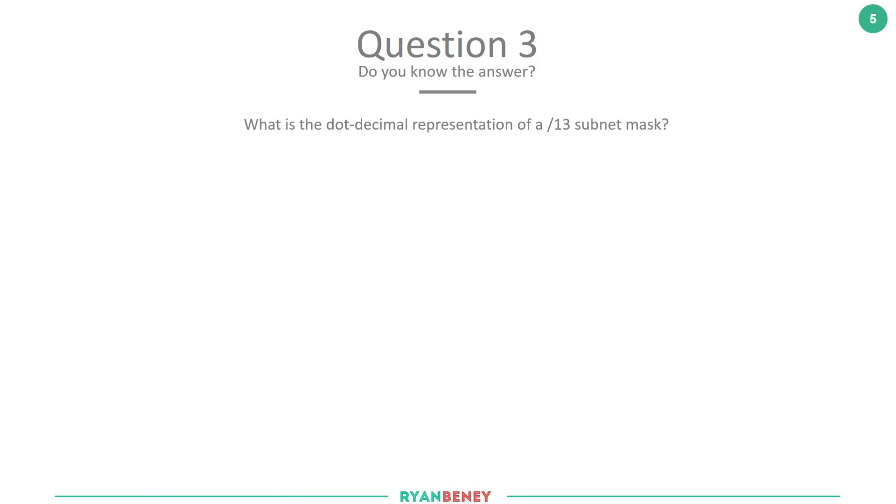Question 3: What is the dotted decimal representation of a /13 subnet mask? Options are A: 255.240.0.0, B: 255.248.0.0, C: 255.252.0.0, or D: 255.254.0.0. Pause the video, and when you think you have the answer, press play and we'll go through it together.